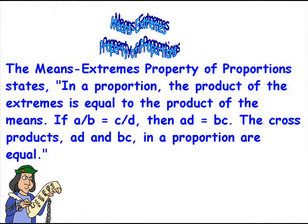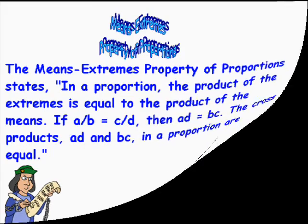The king's brightest mathematician told him about a property invented to solve proportions, called the means-extremes property of proportions. The property states that in a proportion, the product of the extremes is equal to the means. If A over B equals C over D, then AD equals BC. The cross products AD and BC in the proportions are equal, where A and D are the extremes and B and C are the means.